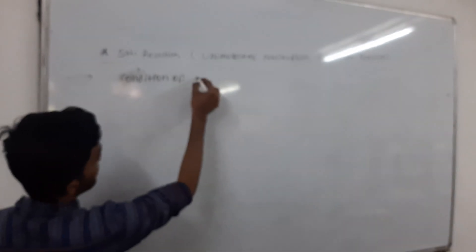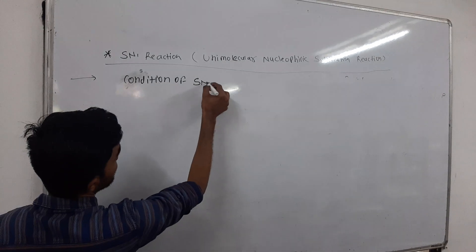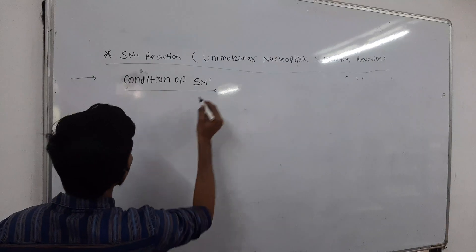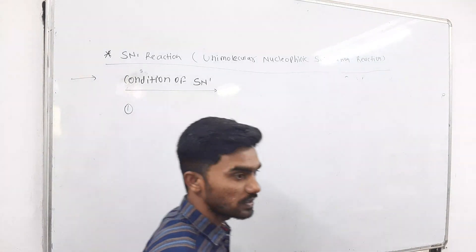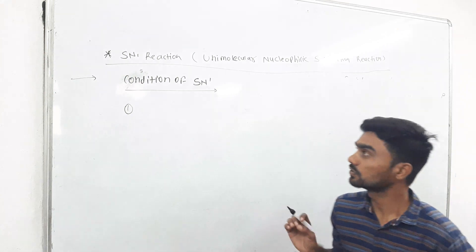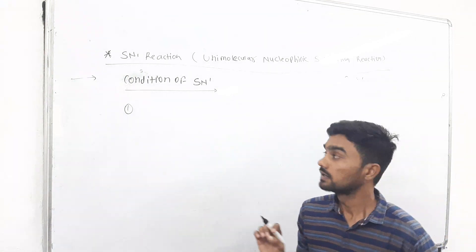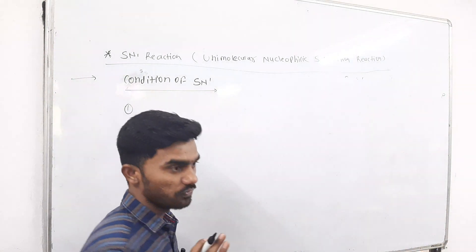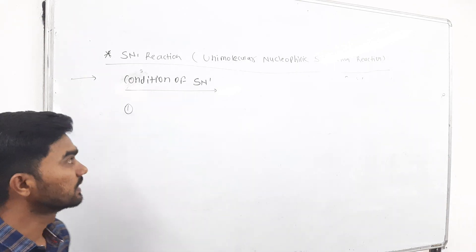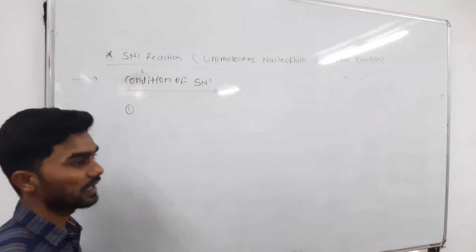First condition is the substrate must be a tertiary halide group. Tertiary halide means any halide group — fluorine, bromine, iodine — any halide group must be required.